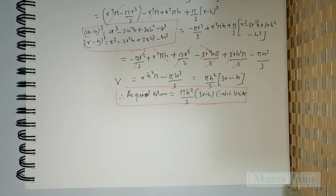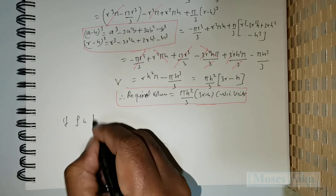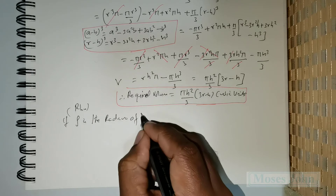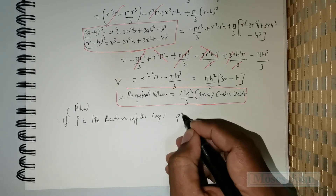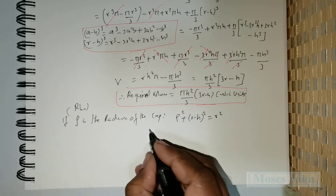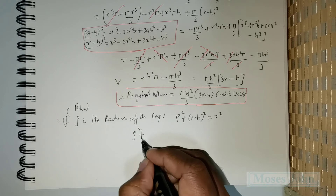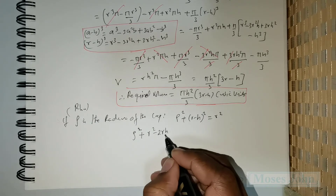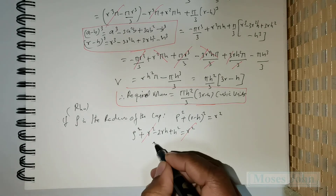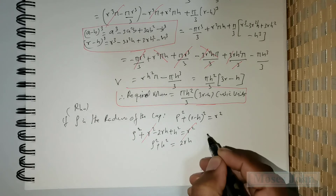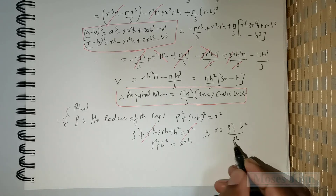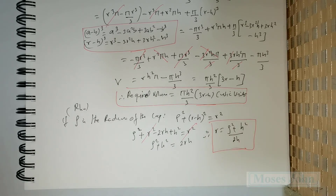The problem continues. If ρ (rho) is the radius of the cap, and we are given that ρ² + (r − h)² = r², we need to find r. Expanding: ρ² + r² − 2rh + h² = r². The r² terms cancel, giving ρ² + h² = 2rh, so r = (ρ² + h²) / (2h).